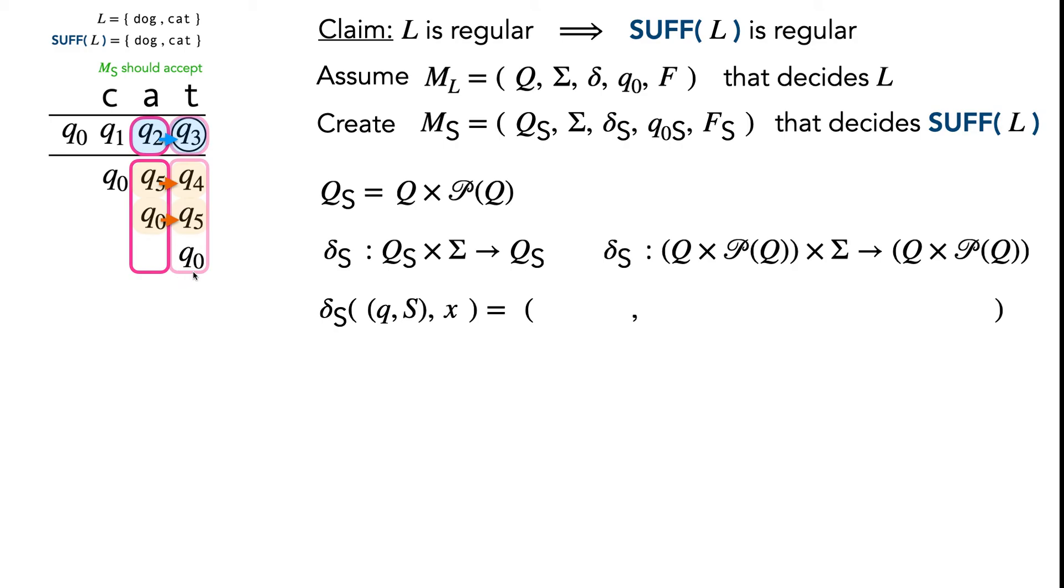Step by step in our transition function, this is the first part in the tuple. At this point, we just have to use the old transition function from M_L, take the old state and transition it based on whatever character you just read.